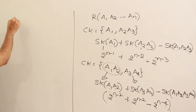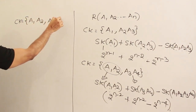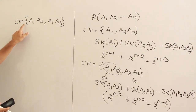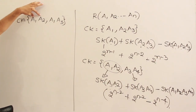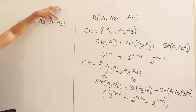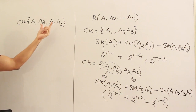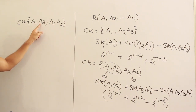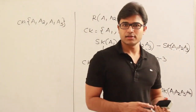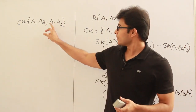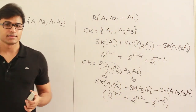Now a slight modification: candidate keys are {a1, a2} and {a1, a3}. Note that a1 is shared between both. First, can a1 appear in two candidate keys? Yes, because neither is a superset of the other — {a1, a2} is not a superset of {a1, a3} and vice versa — so both being candidate keys is valid.